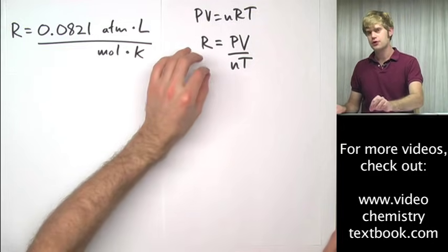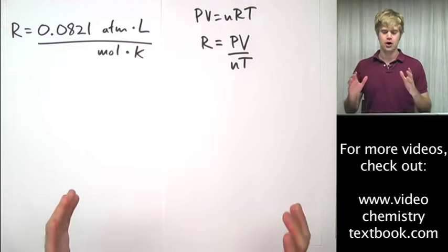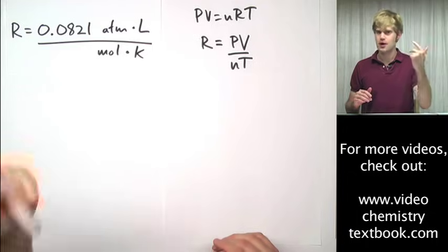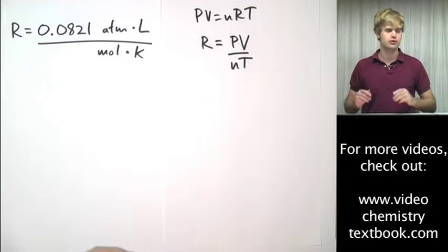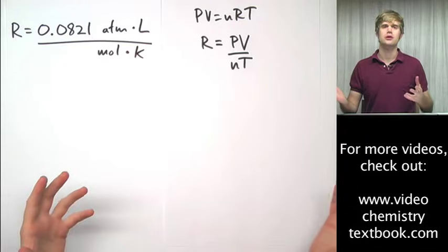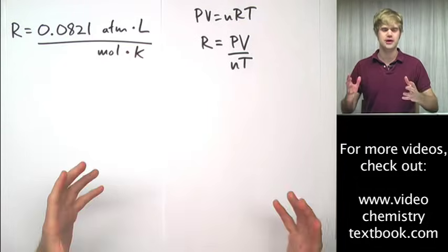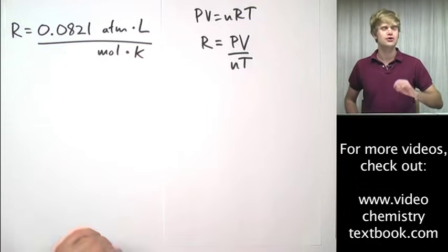In order to solve for R, we need to know the pressure, volume, number of moles, and temperature of a particular sample of gas. We could measure them with a gas tank or something, but there's a shortcut.